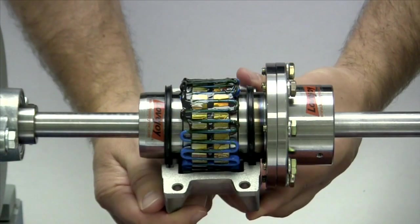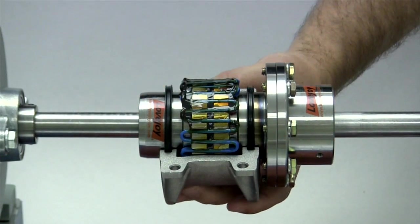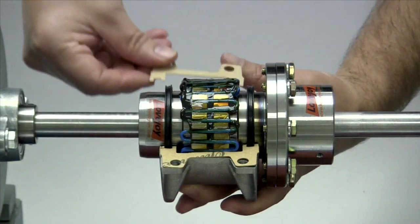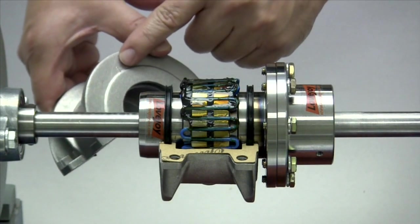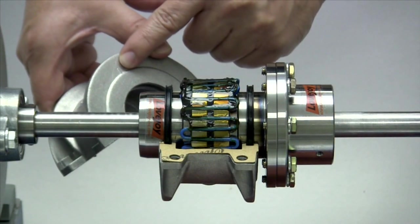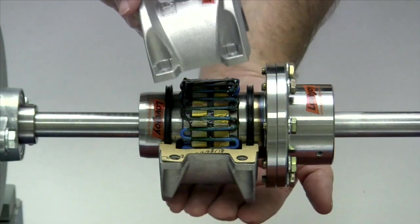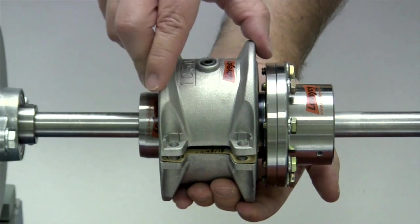Position one of the cover halves under the grid assembly and line up the grooves with the seals. Place the two pieces of gasket material into position on the two sides of the cover. Then take the second cover half and make sure the match marks on the end of the cover halves line up with the same end of the coupling. This ensures the recesses in the cover where the fastener nuts will be located are 180 degrees apart.